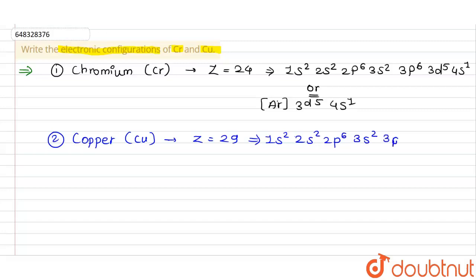Continuing the configuration of copper: 3p⁶ and then 3d¹⁰ and 4s¹. Or using argon notation: [Ar] 3d¹⁰ 4s¹. That is the electronic configuration for copper.